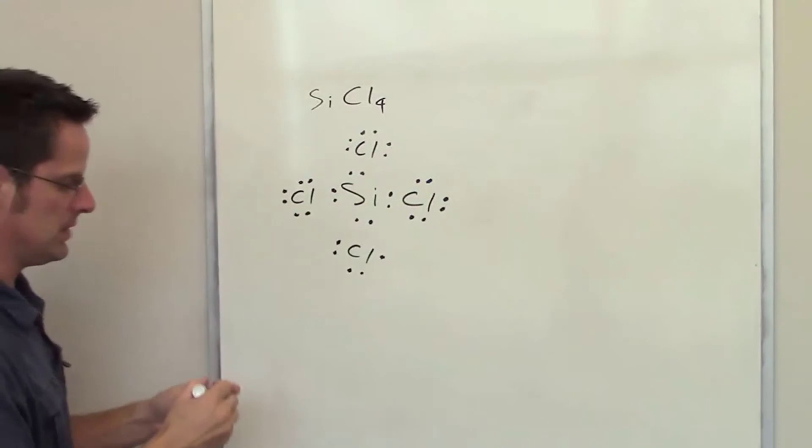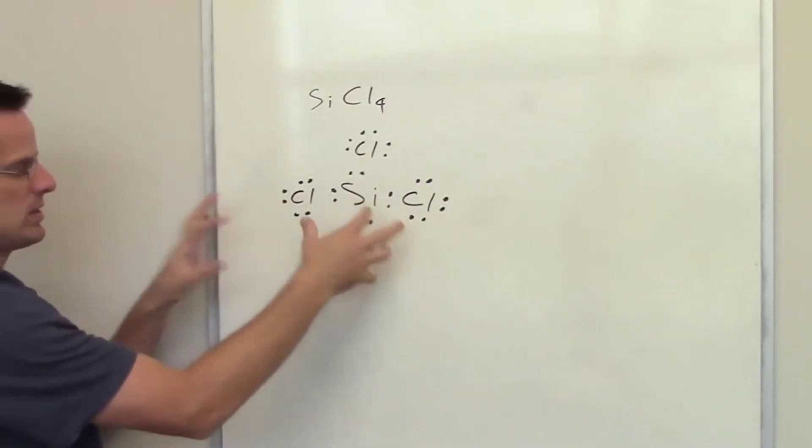Now when that happens, you can see that we have all the valence electrons from each of these chlorines and silicon combining.